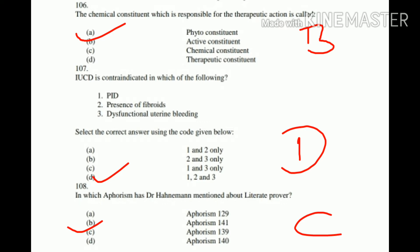Question number 107: IUCD (Intrauterine Contraceptive Device) is contraindicated in which of the following? A. PID, B. Presence of Fibroid, C. Dysfunctional Uterine Bleeding. The correct option is D, which states that IUCD is contraindicated in all three: PID, Presence of Fibroid, and DUB.